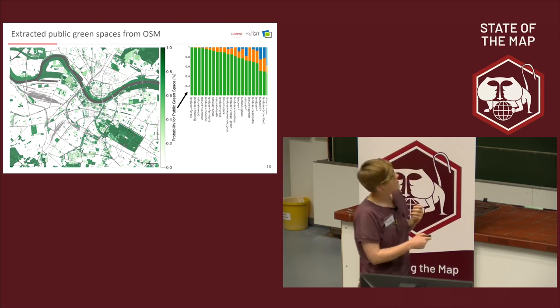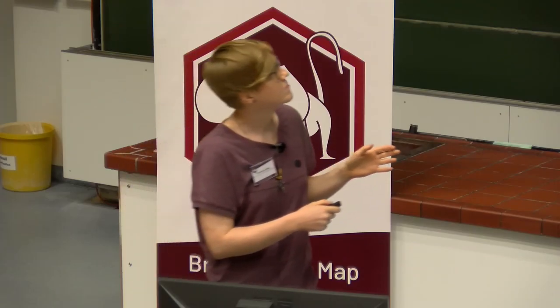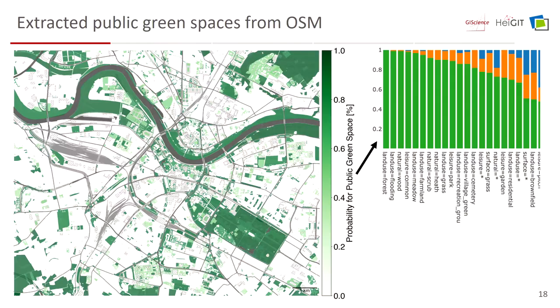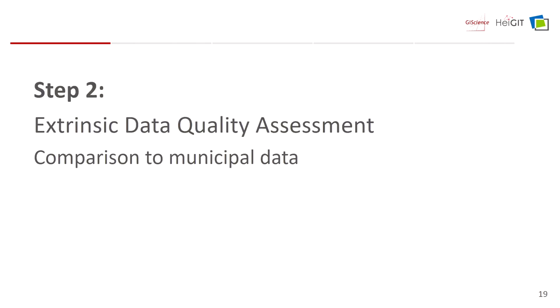This gives us our first map of green spaces extracted from OSM. On the right, it shows the probability that a certain polygon is actually a public green space, derived from the ranking of OSM tags with their probabilities. The bigger the polygon and the darker it is, the more certain I am that it's actually a green space.